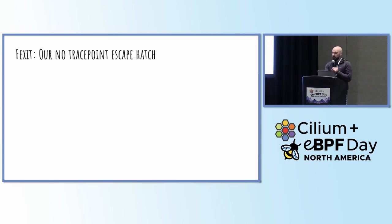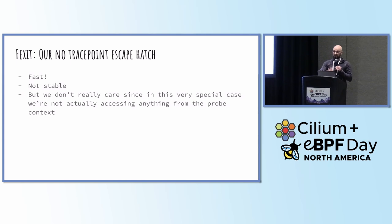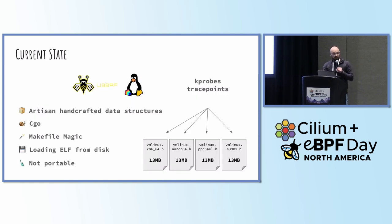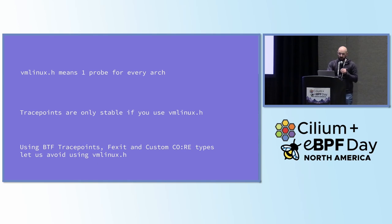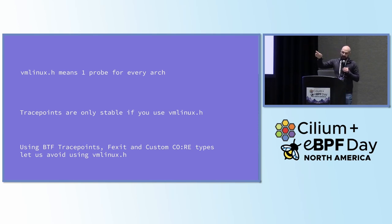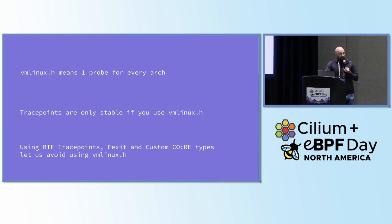For the one case where we didn't have a trace point, we could use f-exit, which allows us to hook into the kernel function. The nice thing was we didn't need to read anything from the context at all — we just needed to know when that thing happened. At this point we've got our BTF trace points, our f-exit, our own CO-RE type definitions, and all that vmlinux code is gone. In summary: vmlinux.h means one probe per architecture and potentially per kernel version; trace points are only stable if you use vmlinux.h — don't fall into that trap; BTF trace points, f-exit, and custom CO-RE types fixed it.